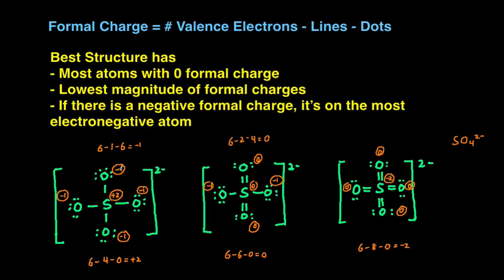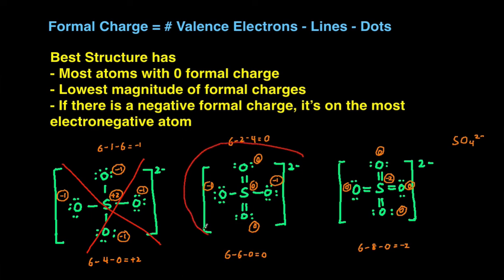We can eliminate the first structure because all the atoms have a formal charge, and we also have a positive two formal charge, so that's a higher magnitude. Ideally, all the atoms have either a zero formal charge or a negative or positive one formal charge. So we can cross this one out. Then we're left with these two, and in the middle one, four of the atoms have zero formal charge versus the right one where only three atoms have zero formal charge, but the structure on the right has a negative two formal charge — that's a higher magnitude. Whereas the structure on the left, all atoms either have zero or negative one formal charge. And then using the last criteria, the negative formal charge is on the oxygen for the structure on the left, but it's on the sulfur on the structure on the right, and because oxygen is more electronegative than sulfur, that makes the middle structure the best and most stable structure, because it fulfills those criteria best.